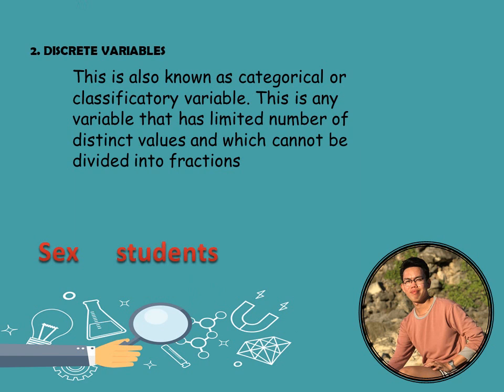Another example is students — you cannot say one-fourth of the students. All of these are counted. Clothes are also an example. Other examples include number of children and number in a family. Those are discrete variables.